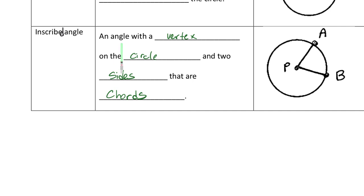It says that an inscribed angle is an angle with a vertex on the circle and two sides are a chord. So I have here a central angle, right, because we know that the central angle, the vertex, is on the center.